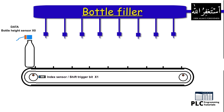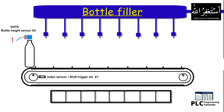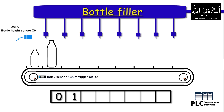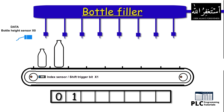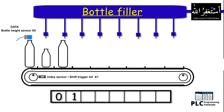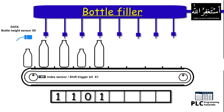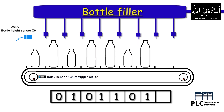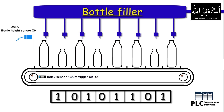As you can see, we have a big 500 ml bottle under the infeed sensor — the height sensor gives data one. As the conveyor moves one step ahead and the index sensor triggers, the data bit one is moved to the first place of the data register. Next, a 250 ml bottle is under the infeed sensor, which gives data zero. As the conveyor moves one step ahead and the index sensor triggers, the data bit zero is moved to the first place of the data register. In this way, data bits in the form of zeros and ones are being entered into the data register and shifted forward to the right each time the index conveyor sensor is triggered.